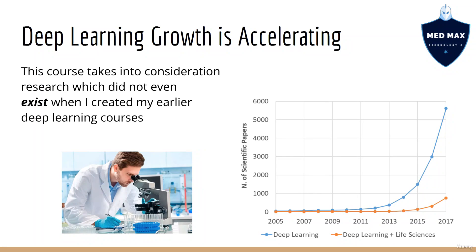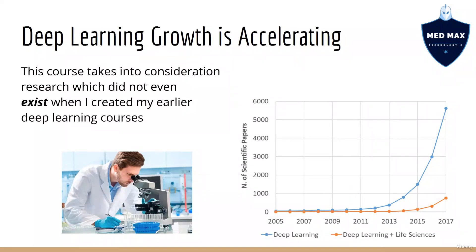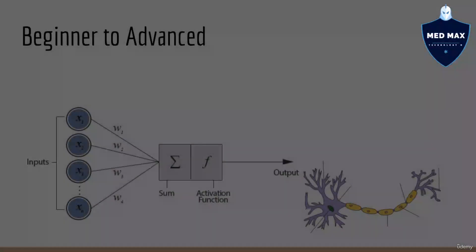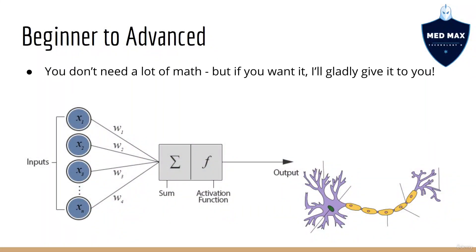This stuff did not even exist when some of my previous deep learning courses came out — things like the best way to train your neural network and architecture decisions. Thanks to the hard work of deep learning researchers all around the world, I've been able to bring that information to you. This course is designed to be a beginner-to-advanced course, so you don't need a lot of math or background knowledge.